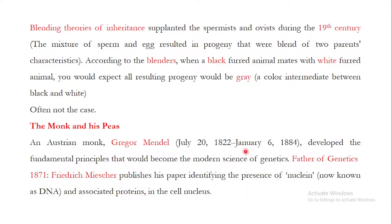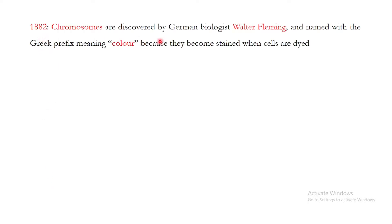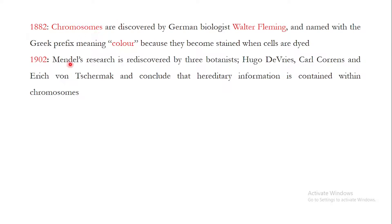In 1871, Frederick Miescher published his paper identifying the presence of nuclein — now known as DNA — and its associated proteins in the cell nucleus, marking the start of the pre-modern era of genetics. In 1882, chromosomes were discovered by Walter Fleming, who named them chromosomes because they were stained when cells were dyed, appearing as colored bodies inside cells. In 1902, Mendel's research was rediscovered by three botanists — de Vries, Carl Correns, and Tschermak — who concluded that hereditary information is contained within the chromosomes.